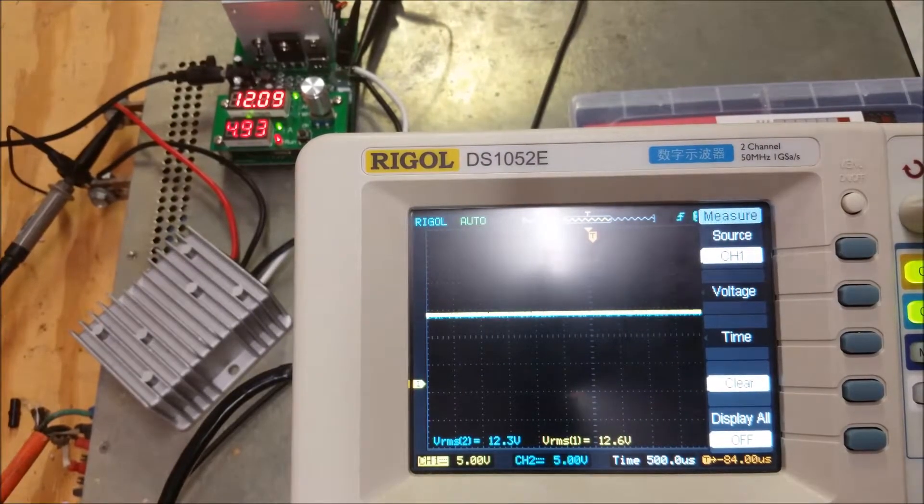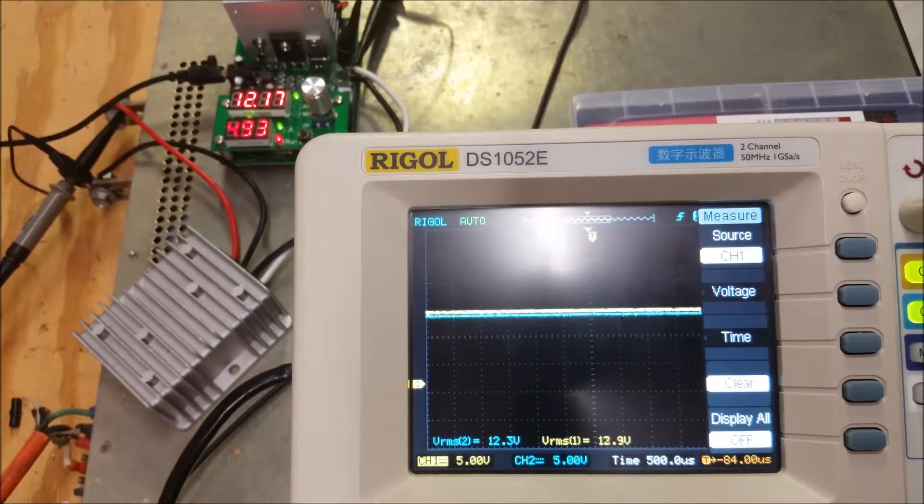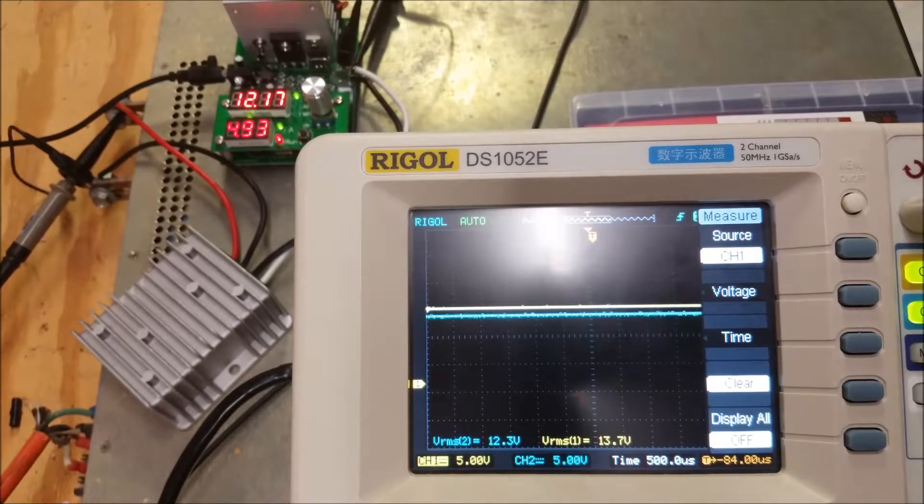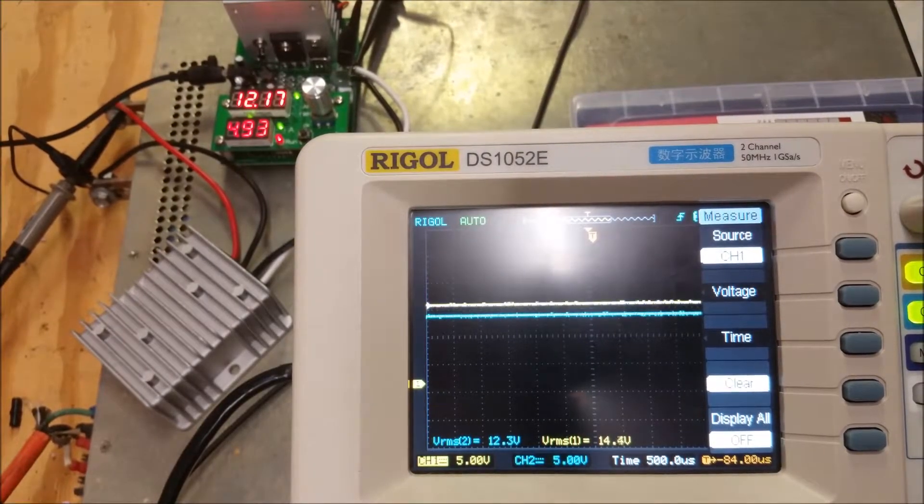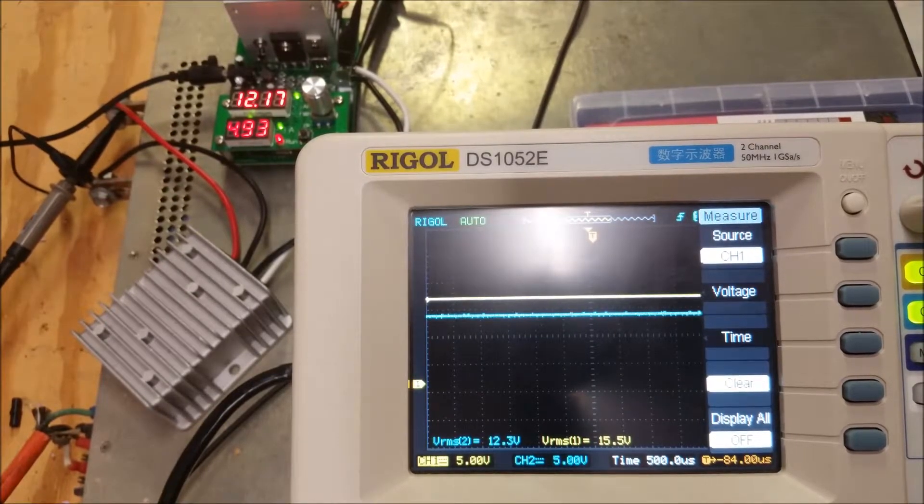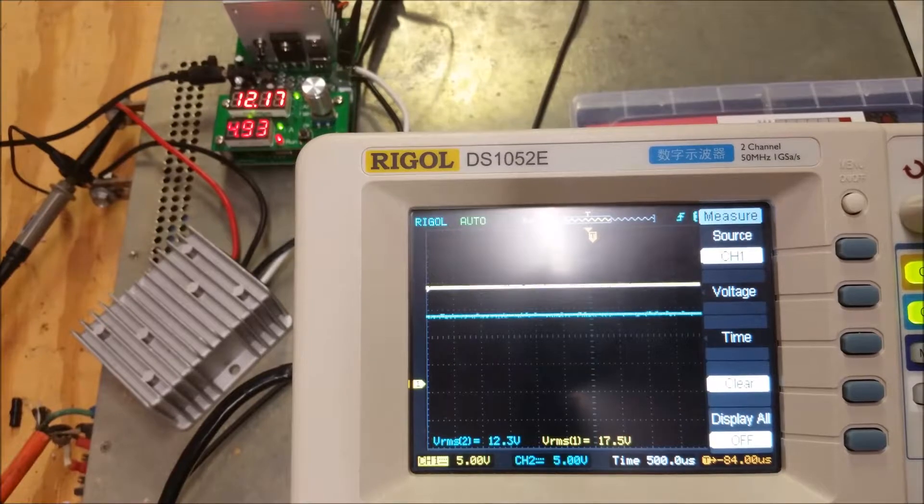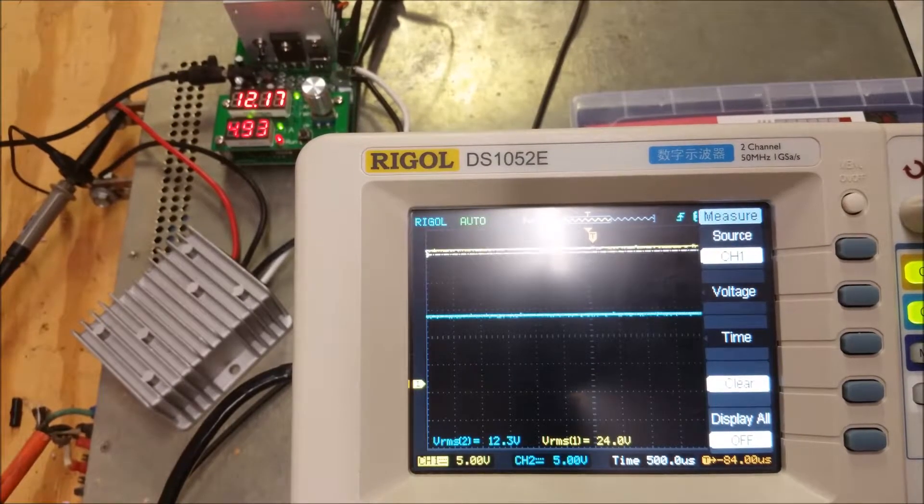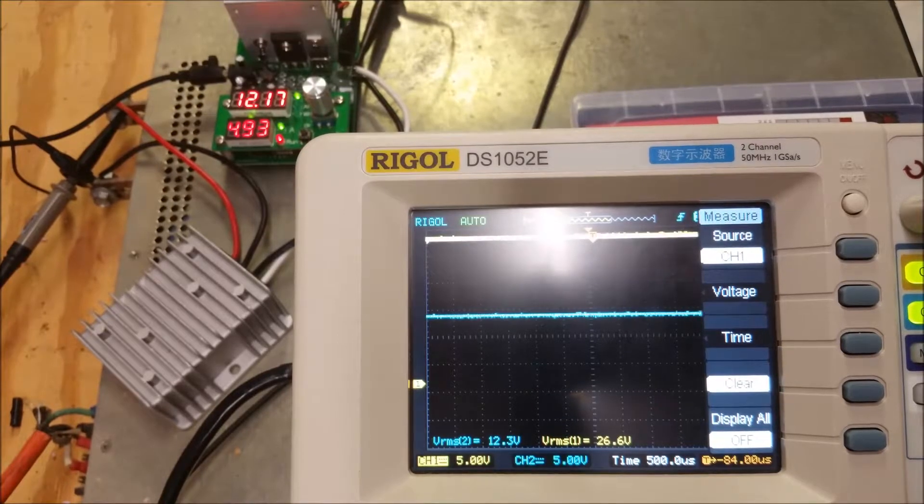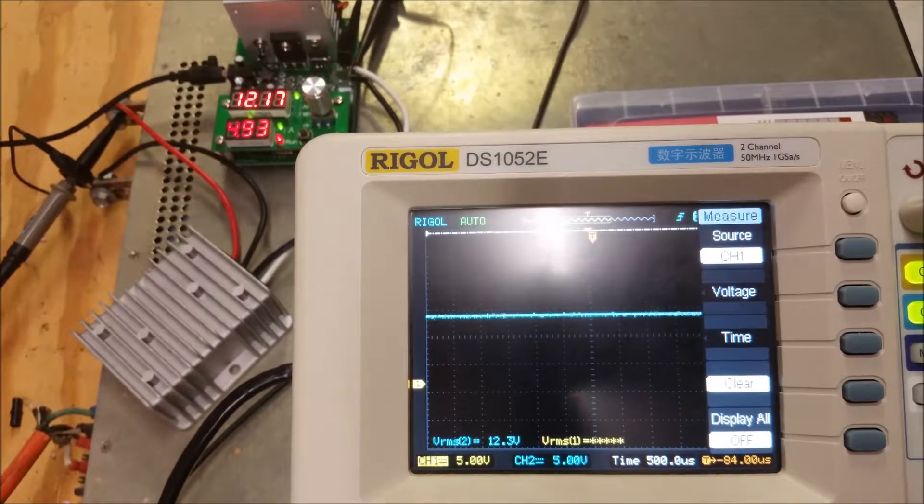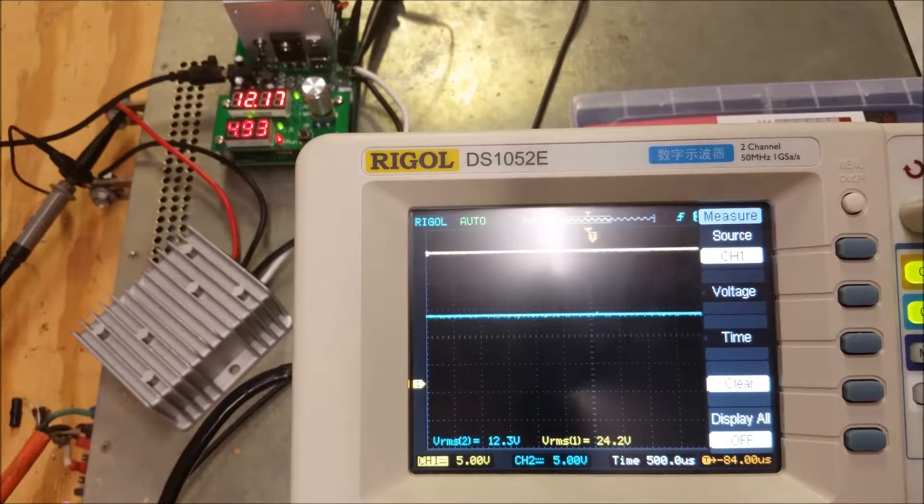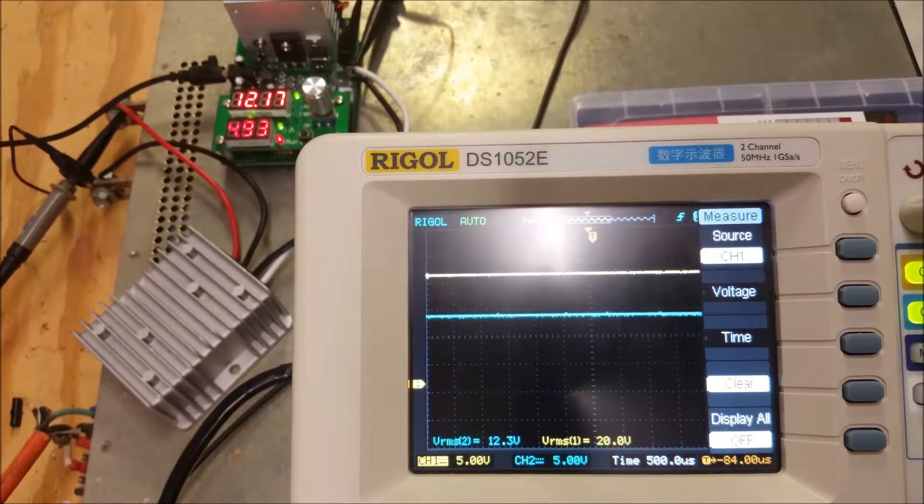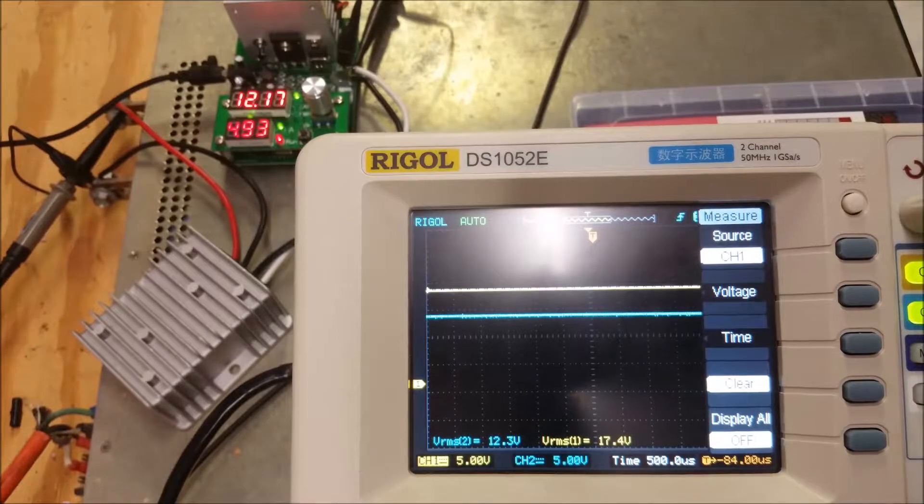So now we're going to crank this voltage up. Again the yellow is the input to the DC to DC converter. Looks like the output is holding pretty steady at 12.3 volts. And as we crank this up to roughly 30 volts, it looks good. So at a roughly 5 amp load, it looks like it's pretty stable.